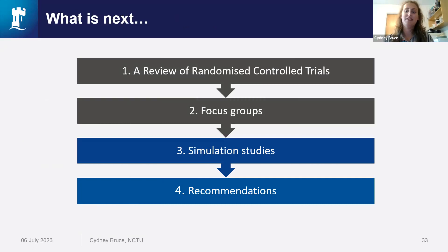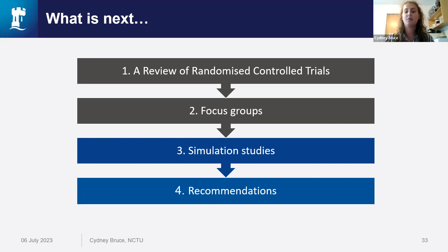So what's next within my thesis? The review of trials and the focus groups have given us a good understanding of current practice of randomisation method selection and the reasoning behind this practice. In order to take this research further, researchers have stated the importance of balance and predictability but are not checking these things within their own trials. So next, I want to develop metrics that can be used by trialists to measure the effects of balance and predictability. I'm then going to use a simulation study and apply the most commonly used randomisation methods to real-life trial data to measure the effect different methods have on sequence balance and predictability for different trial situations. This will be combined into final recommendations, with metrics made available for researchers to use within their own studies.